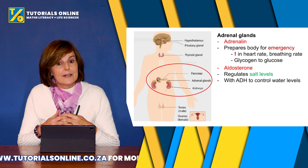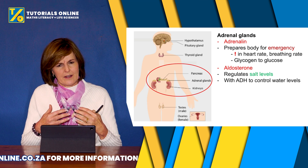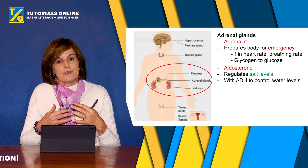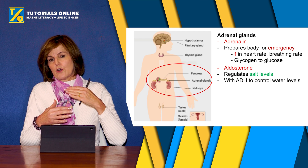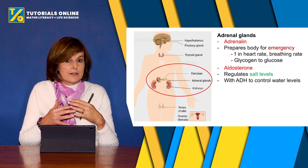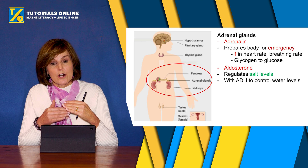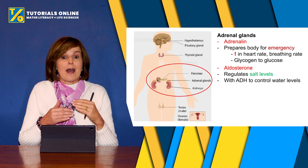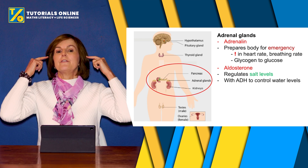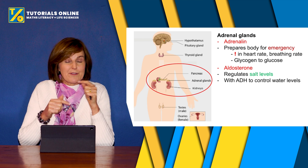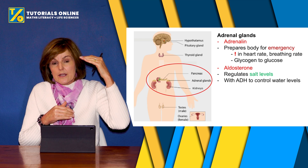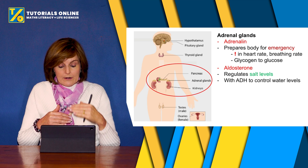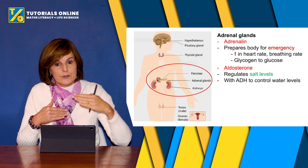Another hormone secreted by the adrenal glands is aldosterone. Aldosterone regulates your salt levels in your body, and salt levels and water levels are very closely related because of osmosis and water potential. Aldosterone works very closely with ADH — remember, ADH is released from the hypothalamus. ADH and aldosterone work together to regulate your salt and water levels: aldosterone works on the salt, ADH on the water levels, and they work together as a team.